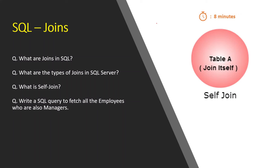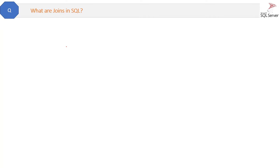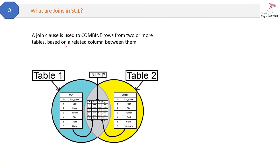Now we will cover questions on joins in SQL — interviewers will mostly ask questions about joins only. A join is used to combine rows from two or more tables based on a related column between them. Here you can see the diagram where we have two tables, table one and table two, and joining them gives you the combined result.